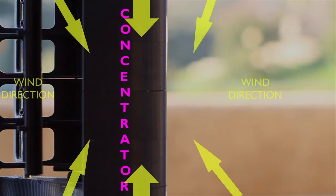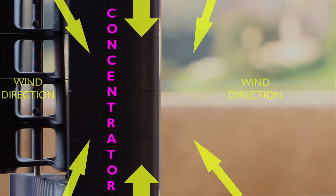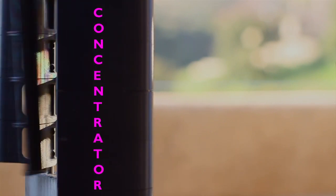In low and moderate wind speed conditions, the onboard computer tells the drive motor to align the concentrator into the eye of the wind.